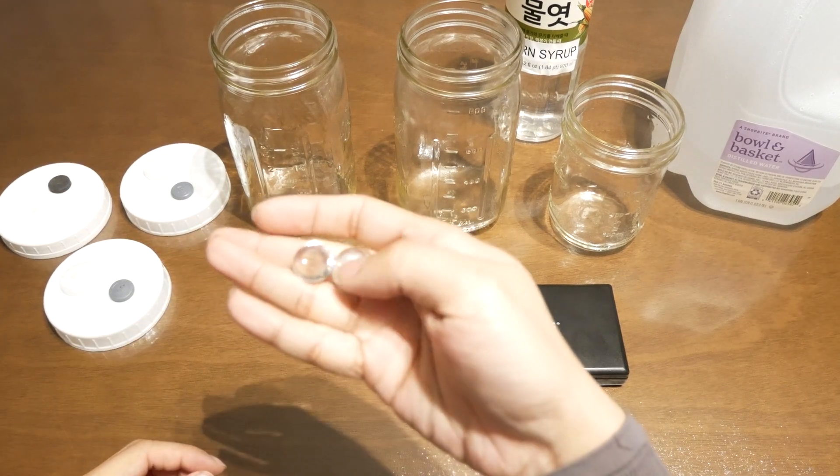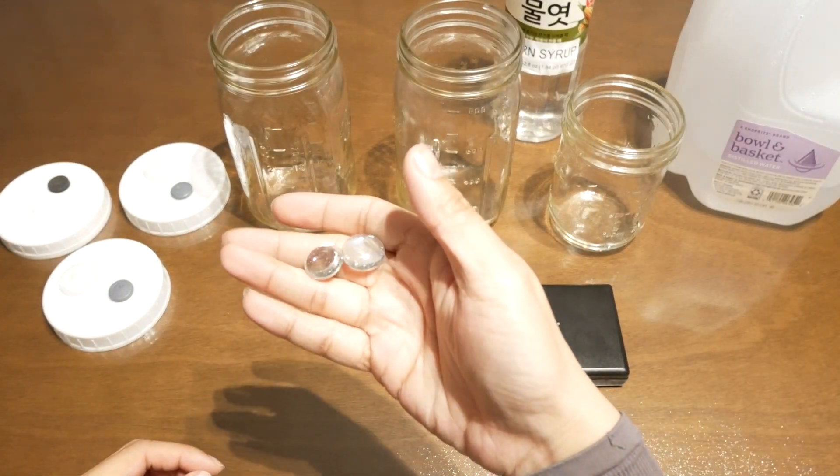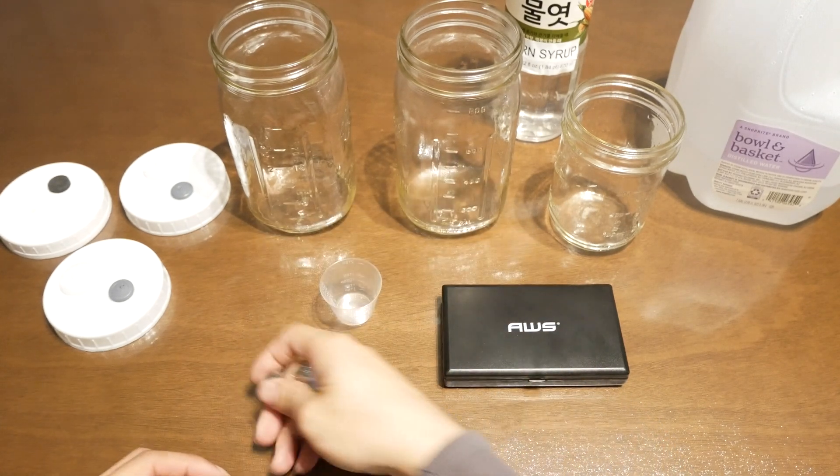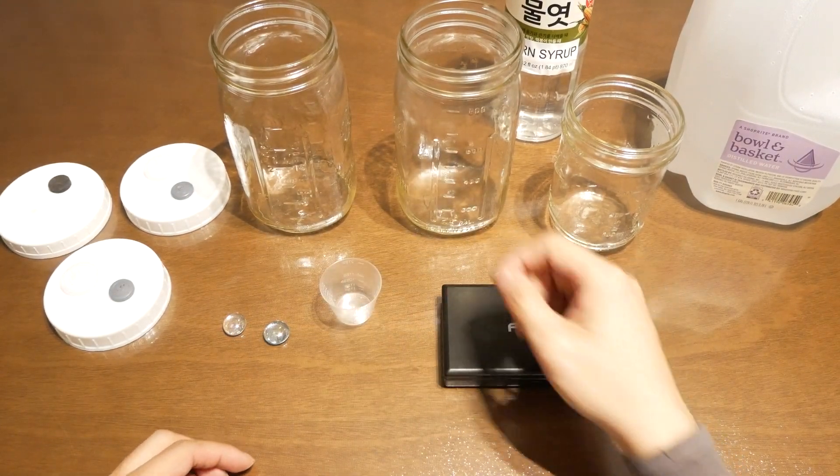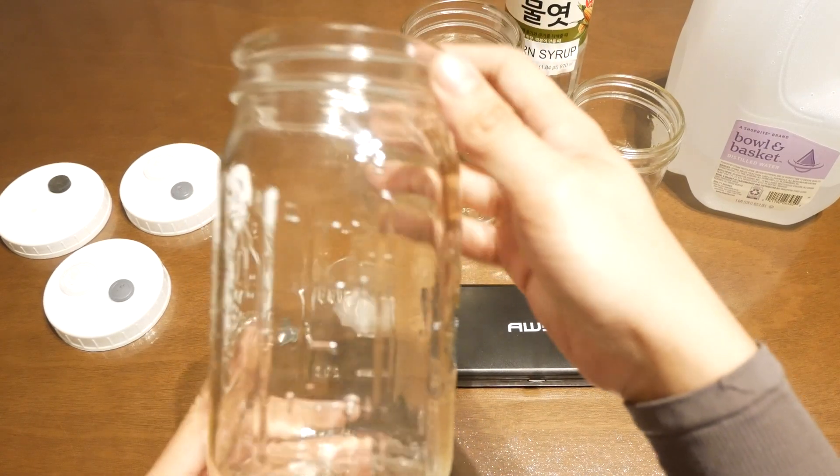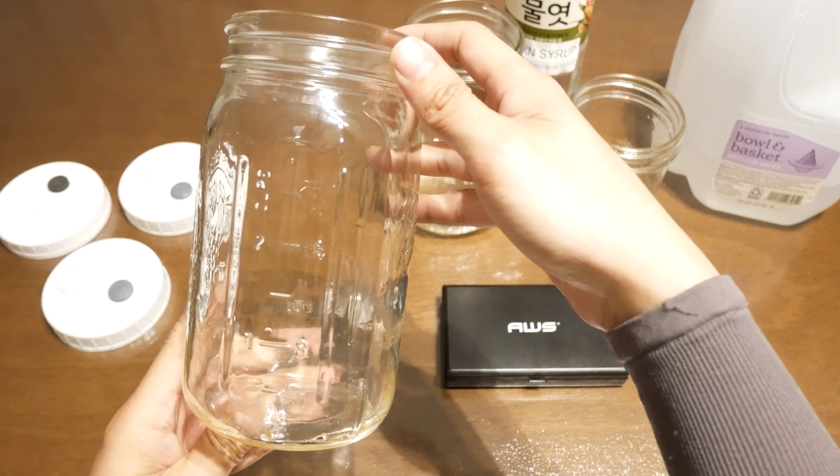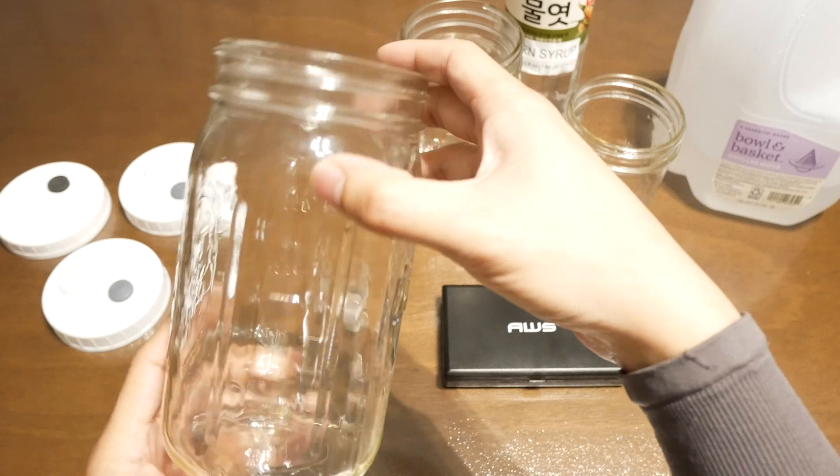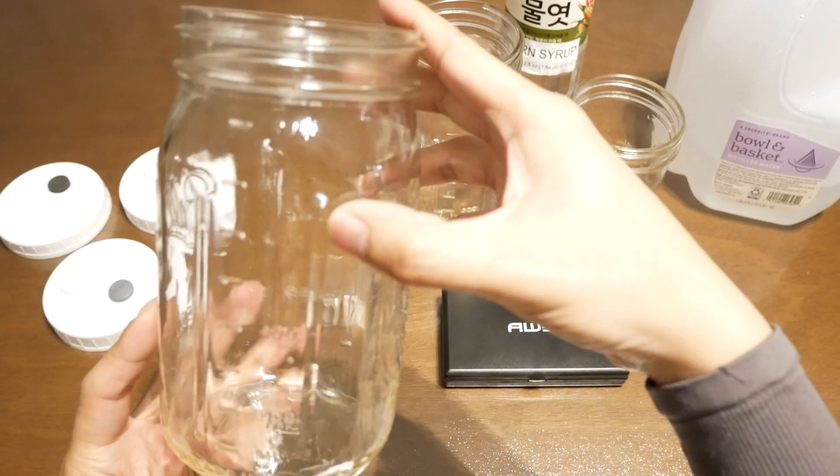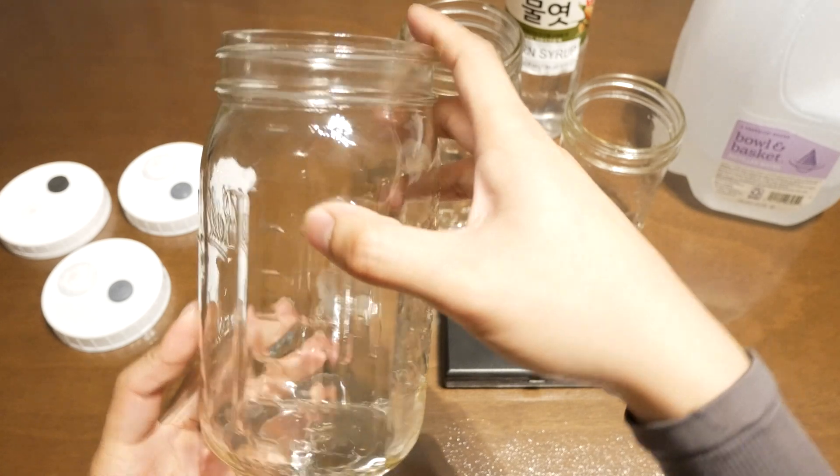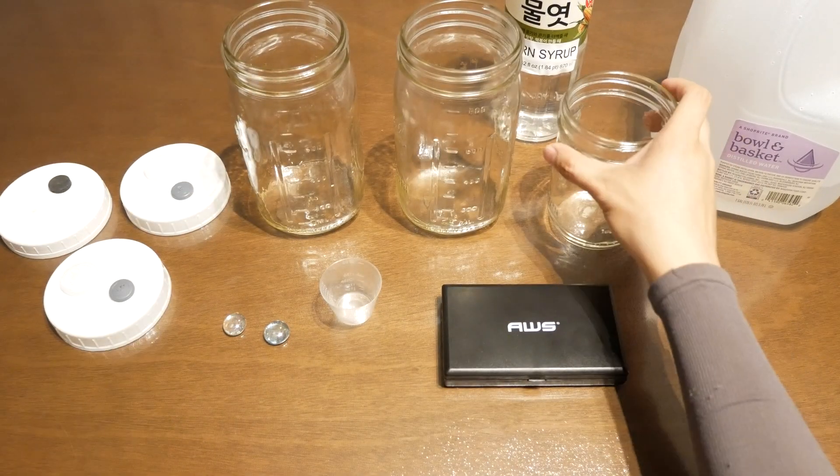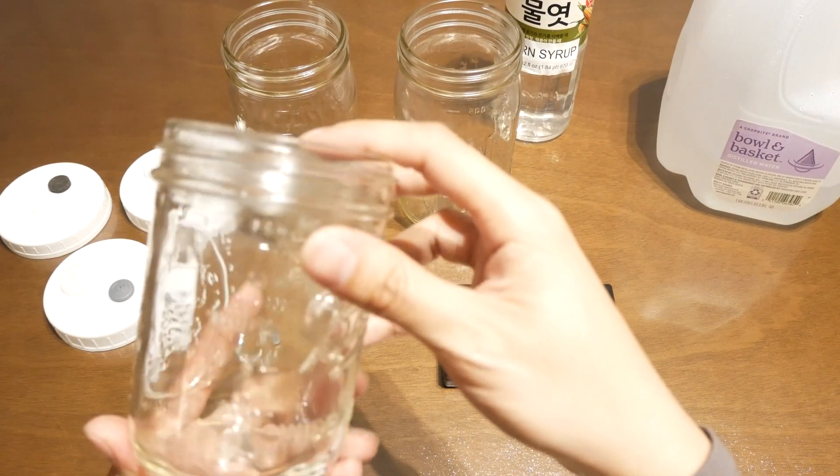You're also going to want some type of agitator. You can use magnetic stir bars, pieces of glass. Today I'm using two marbles. This is to help stir up the mycelium during the colonization phase. You're also going to need your glass mason jars. Whatever container you want to use to hold your liquid culture in. I'm going to be using quart jars and pint jars for today's example.